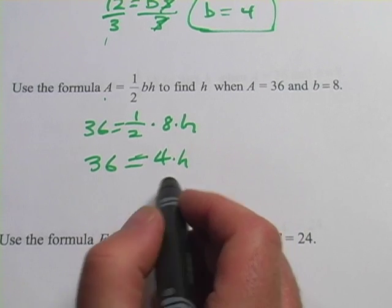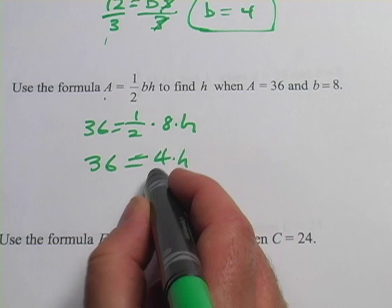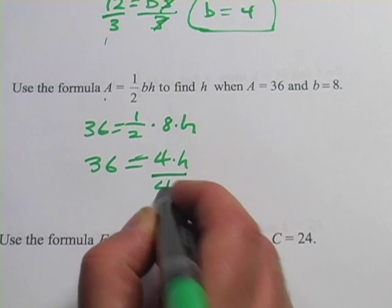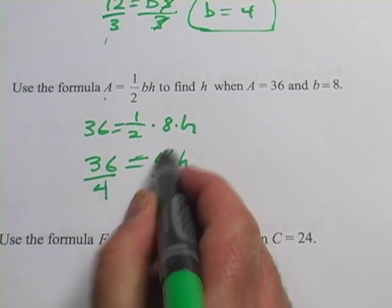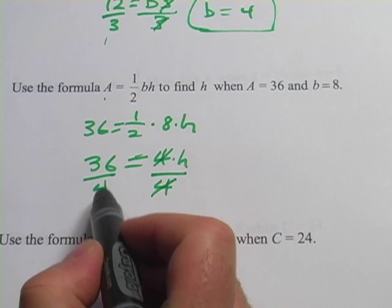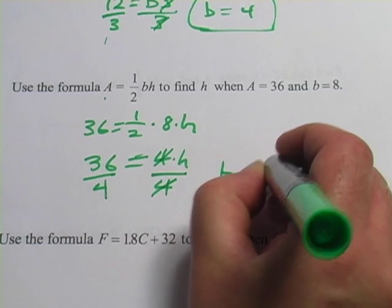And now to solve for h, I have to undo the one thing that's being done to h, which is it's being multiplied by 4. So I'll do the opposite. I'll divide by 4, but I have to do that to both sides. Here the 4s cancel. 36 divided by 4 is 9. So h equals 9.